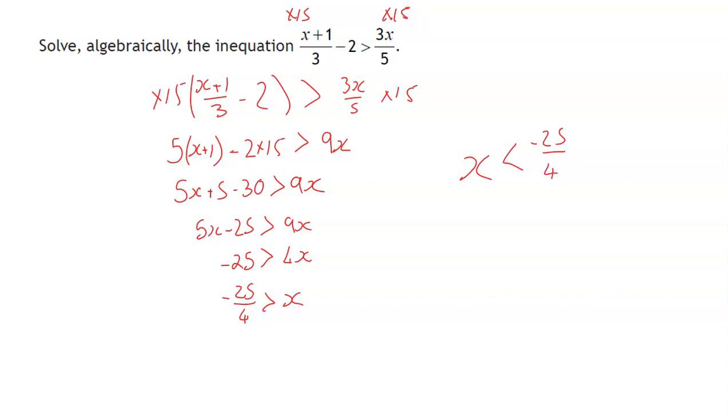So for example, I could have taken this line here, the 5x minus 25 and then is greater than 9x and went with this logic of putting the x on the left and the numbers on the right. And I'd have ended up with negative 4x is greater than 25. So what I'm going to then do at that stage is I'm going to divide both sides by negative 4. But because it's a negative that I'm multiplying or dividing by, my inequality would flip in this case. So again, I'd end up with x is less than negative 25 over 4.